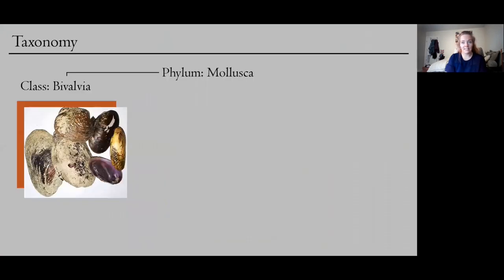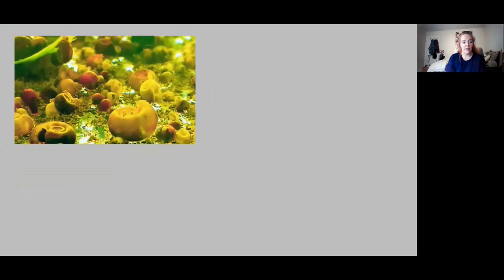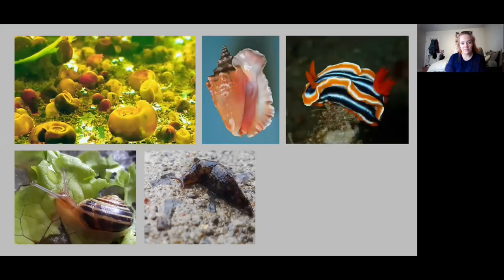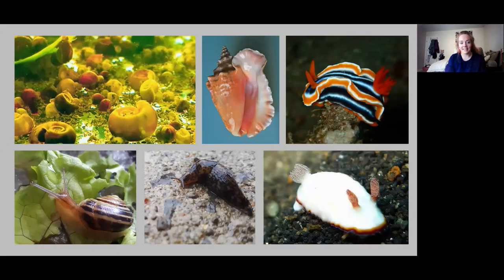Then the next major class is the gastropods. This is actually the largest class of the molluscan phylum, and involves animals like marine and aquatic, as well as terrestrial snails, slugs, things that are snails that you don't realize are snails, like the conch. And then a wonderful group of organisms called the sea slugs or the nudibranchs, which tend to be really vibrantly colored and have great names, like my personal favorite, the sea bunny.